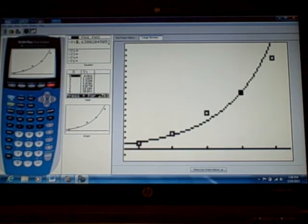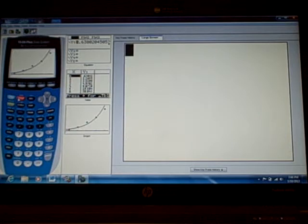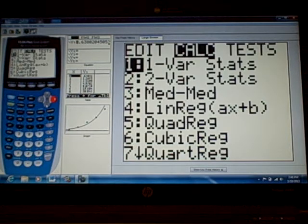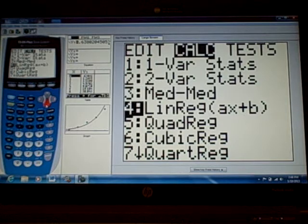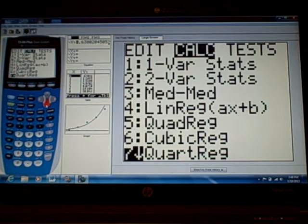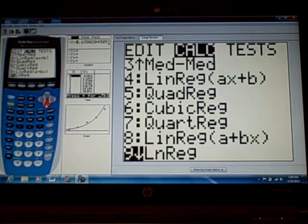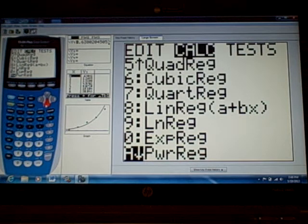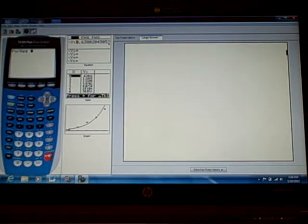So we're going to try the other one now. Let's quit, press stat and go over to calc and we're going to try a power function. I'm feeling a power function because it looks like it would pass through the origin. That's a really good indicator it might be a power regression.